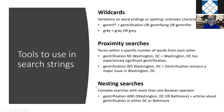Third, we have nesting searches, used in complex searches where there is more than one Boolean operator. If you remember the order of operations from math class, you'll recall that you pay attention to what's inside the parentheses first, then outside. So if we search for gentrification AND (Washington DC OR Baltimore), the database first looks inside the parentheses to find materials with either Washington DC or Baltimore, then looks outside to find materials that have gentrification and either one of those terms. These tools — wildcards, proximity searches, and nesting searches — can be used individually or in combination.